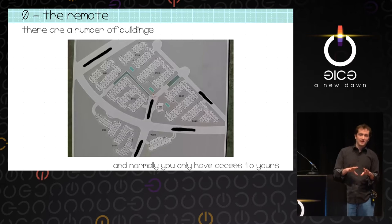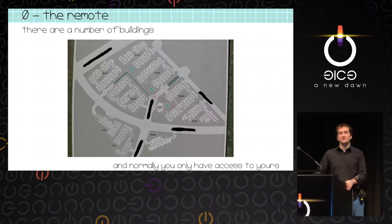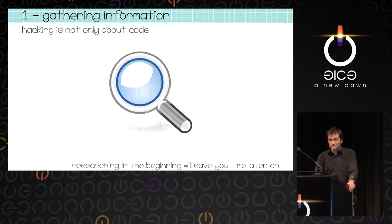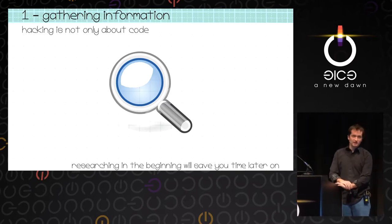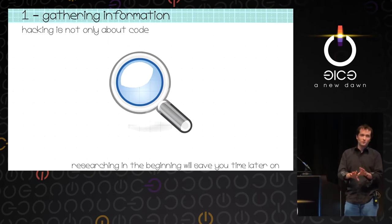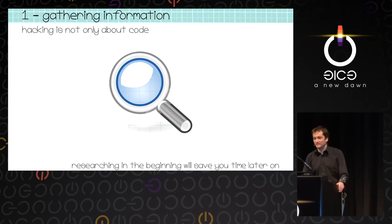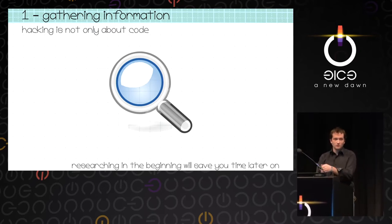This remote is not only used in this complex — it's used in a lot of complexes in California. If you've seen this remote, it's exactly the same system. Before disassembling the remote, it's important to find information, particularly if you're a beginner. If you already did software-defined radio, you'll probably figure out the modulation early on. But if you've never done it, it's pretty hard. Finding documents about the remote will help and save a lot of time.